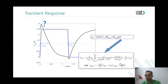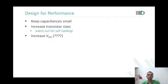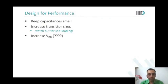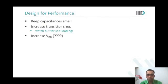So essentially CGD and CGS are getting coupled with C_out. That is what is coming into picture. So if you want to improve performance, what do you do?